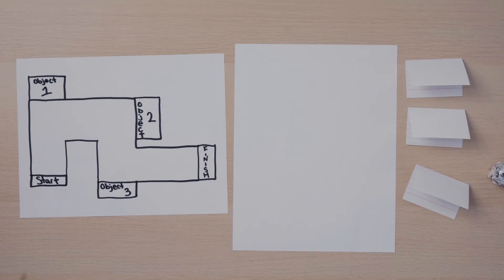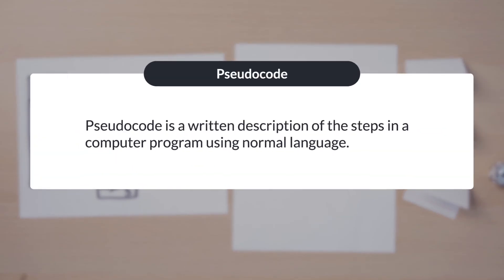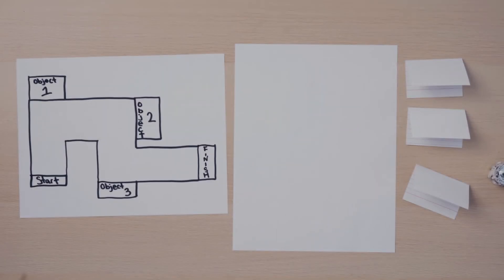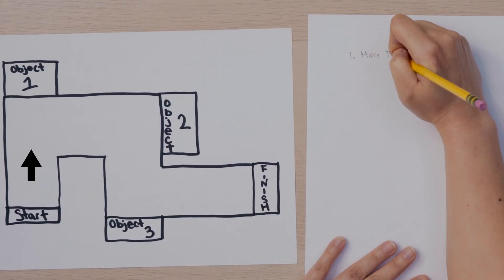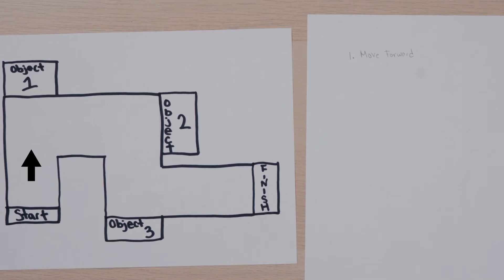Now that your maze is complete, think about how the bot is going to move through it. You will plan out the sequence of a program using pseudocode. Pseudocode is a written description of the steps in a computer program using normal language. You will need another piece of paper and a pencil to write down the sequence your bot needs to follow. Look at your map — what is the first direction your bot is going to move? Write 'Move Forward' to remember this will be the first step in the sequence.